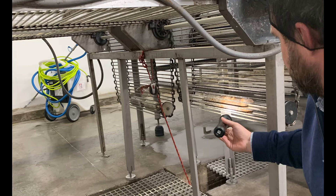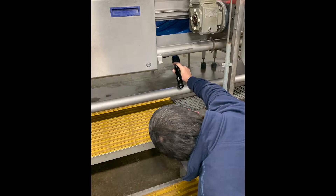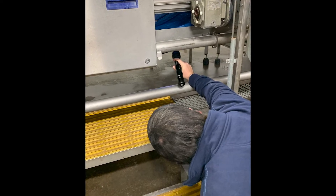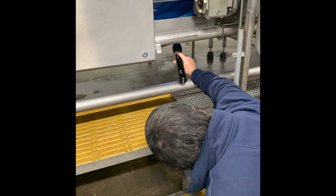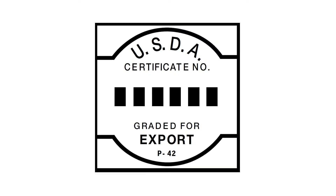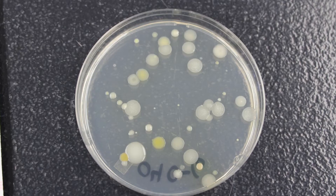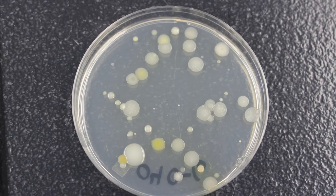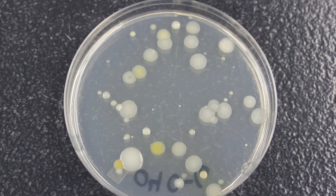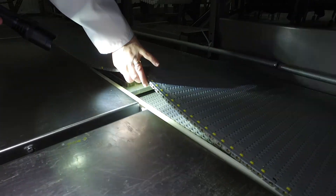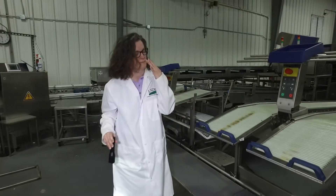To meet these goals, AMS inspectors will assess for voluntary grading program requirements during the pre-operational sanitation inspection and throughout processing operations by utilizing organoleptic inspection assessments. While AMS may review microbial test results as part of certain export programs, AMS does not conduct nor require swabbing or biological testing during routine sanitation assessments. Organoleptic inspection assessments include sight, smell, and touch.